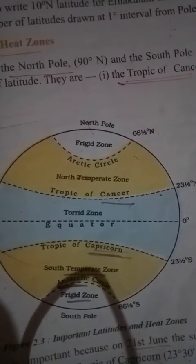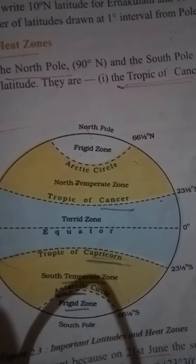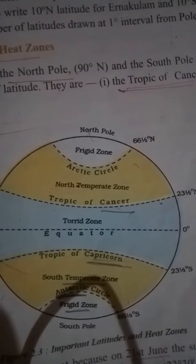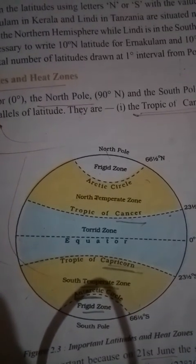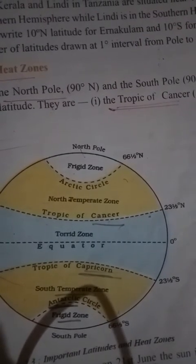If you hold a globe in front of you, the top will be the North Pole and the bottom will be the South Pole. Slowly rotate it and mark a series of points near the middle of the globe. As you rotate it slowly, keep placing dots in the middle — a series of dots. If you join these points, it will form a big circle around the globe.